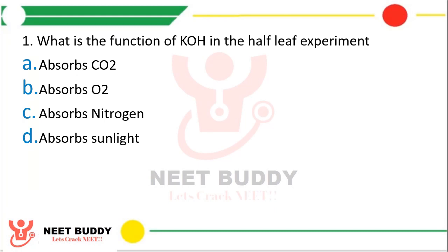The correct answer is option A, that is absorbs carbon dioxide. This experiment was carried out to demonstrate the role of carbon dioxide. So in the half leaf experiment, the KOH that covers half of the leaf has the function of absorption of carbon dioxide.